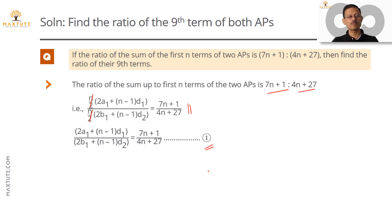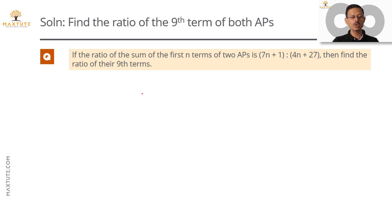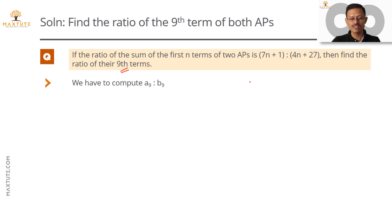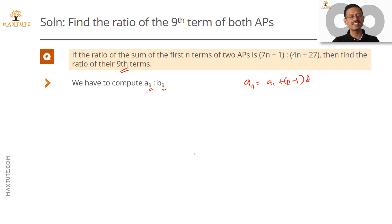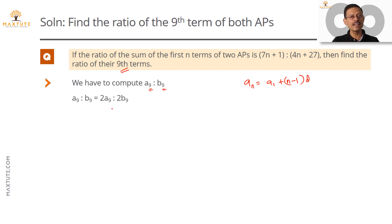Now let's move to the second part: we need to find the ratio of the ninth term of these two sequences. The formula for the nth term is An = A1 + (n−1)·D. We need to find A9 : B9. Whether we compute A9 : B9 or 2A9 : 2B9, it will be the same ratio, so let's find 2A9.